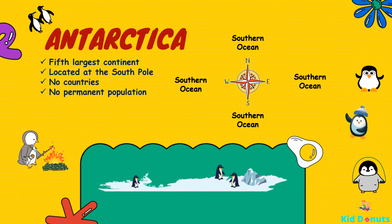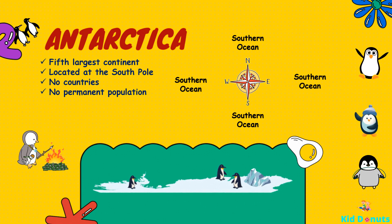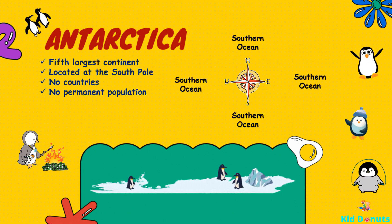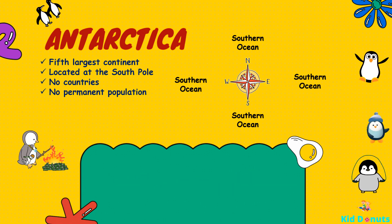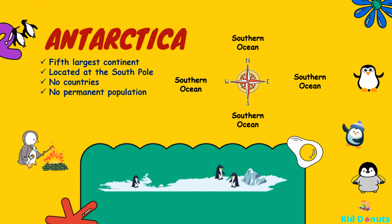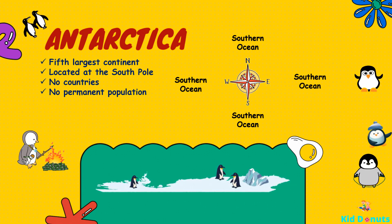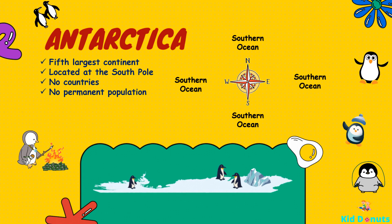Temperatures in Antarctica, much lower than Arctic temperatures, plunge lower than minus 73 degrees Celsius, or minus 100 degrees Fahrenheit.